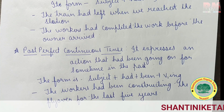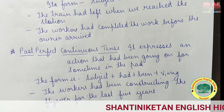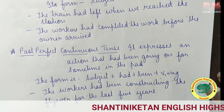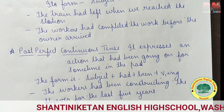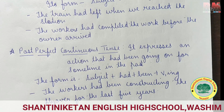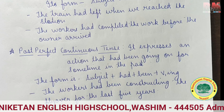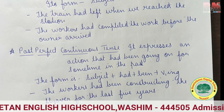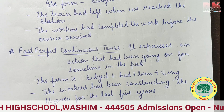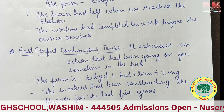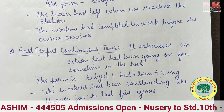Past perfect continuous tense expresses an action that had been going on for some time in the past. The form is subject plus had plus been plus V1+ing. For example: 'The workers had been constructing the flyover for the last five years.'